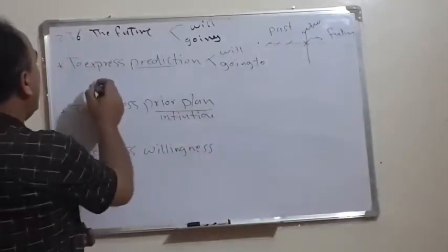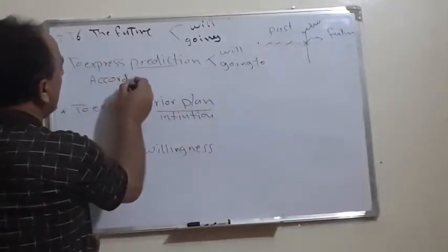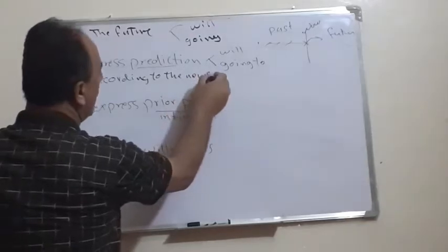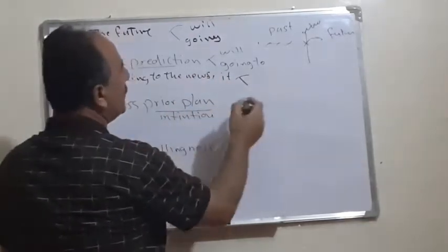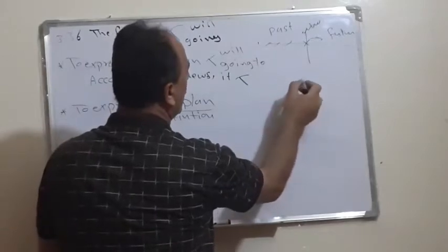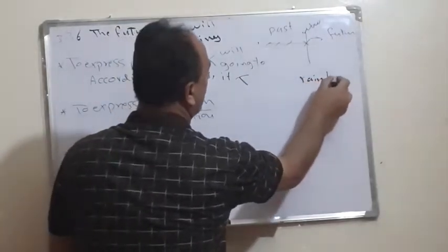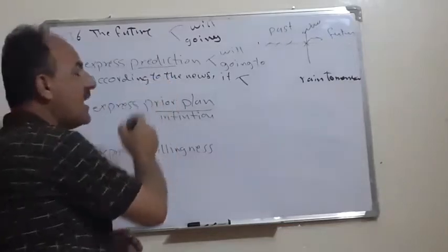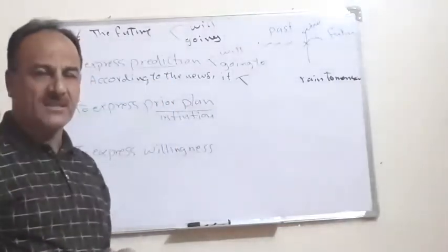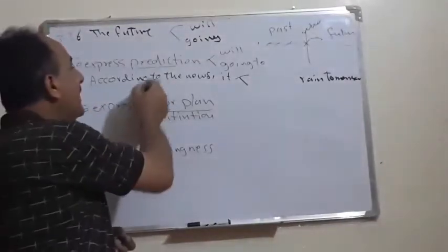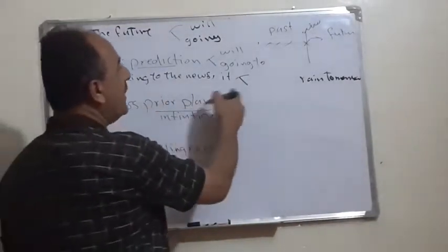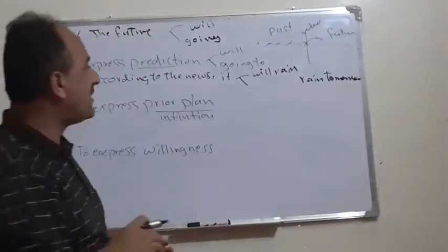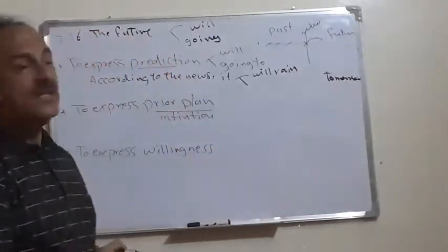For example, if we say 'according to the news,' this has a meaning of prediction. So we can say: 'It will rain tomorrow.' It is possible to use the 'will' form here — 'It will rain tomorrow.'